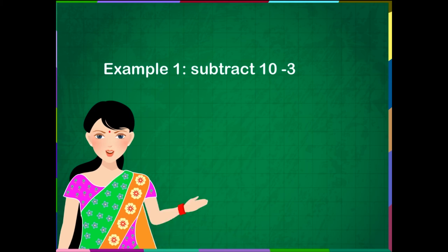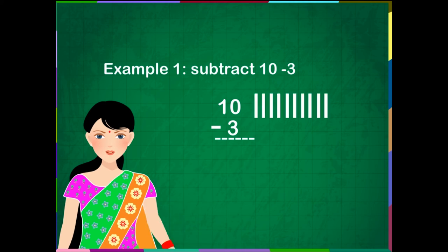Subtract 10 minus 3. We will write the numbers 10 and 3 below the other. Then, draw 10 small lines near the number 10. Now cross 3 lines from the 10 lines.